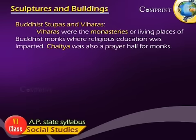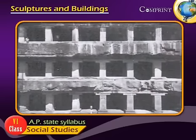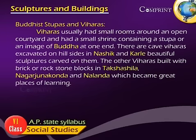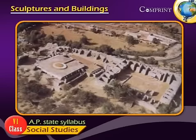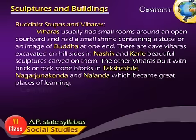Viharas were the monasteries or living places of Buddhist monks where religious education was imparted. Chaitya was also a prayer hall for monks. Viharas usually had small rooms around an open courtyard and had a small shrine containing a stupa or an image of Buddha at one end. There are cave viharas excavated on hillsides in Nashik and Karli, with beautiful sculptures carved on them. Other viharas built with brick or rock stone blocks in Takshasila, Nagarjuna Konda and Nalanda became great places of learning.